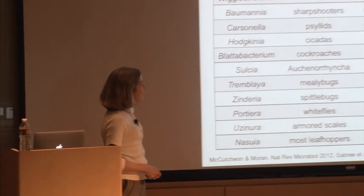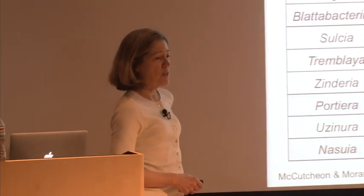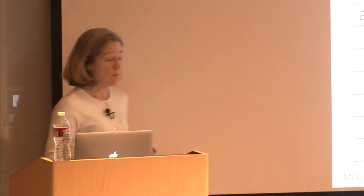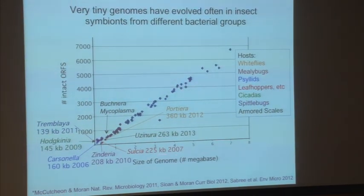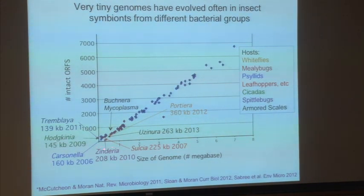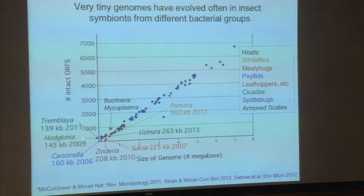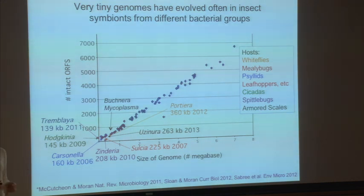They come from different bacterial groups and most are very AT-biased in nucleotide base composition — a convergent pattern that's evolved repeatedly in different groups of bacteria that have gone into this way of life. If you look at the size of a bacterial genome in megabases versus number of genes, there's a very close correlation — bacterial genomes are made of genes with high coding density, so size is a very good predictor of gene number.